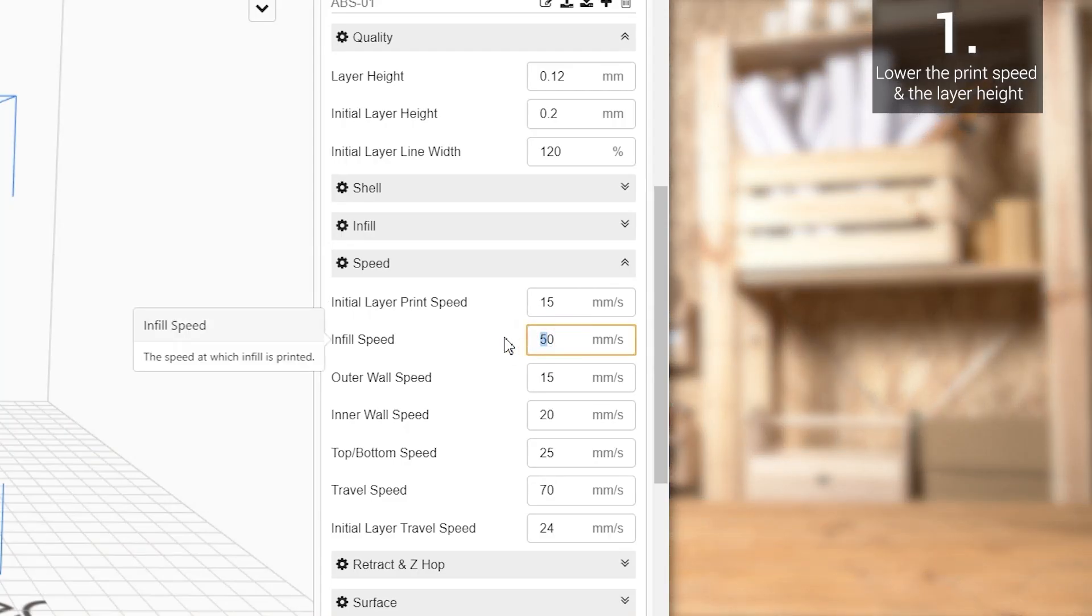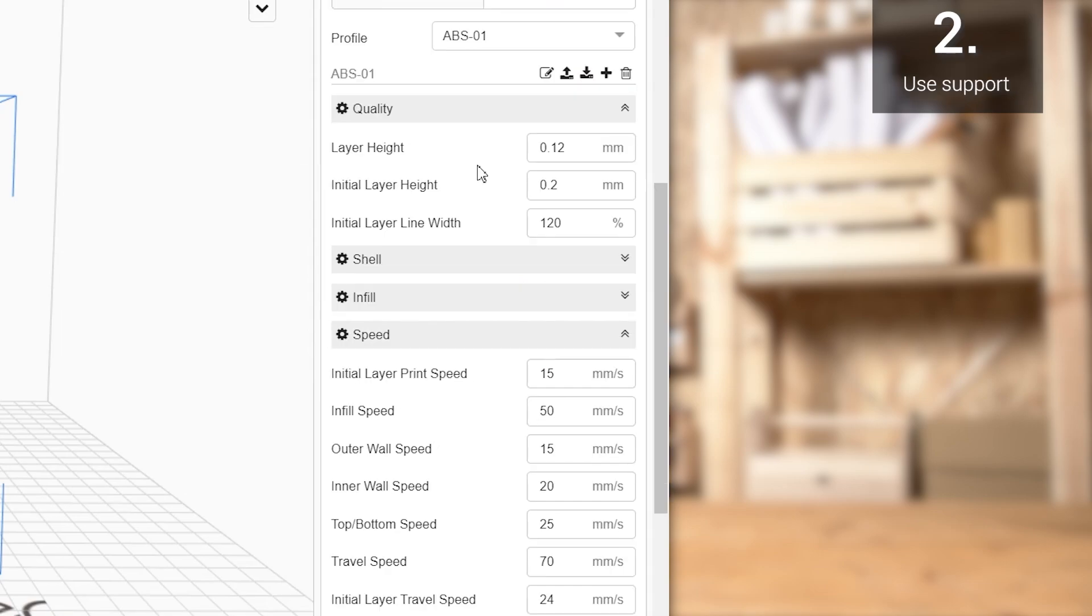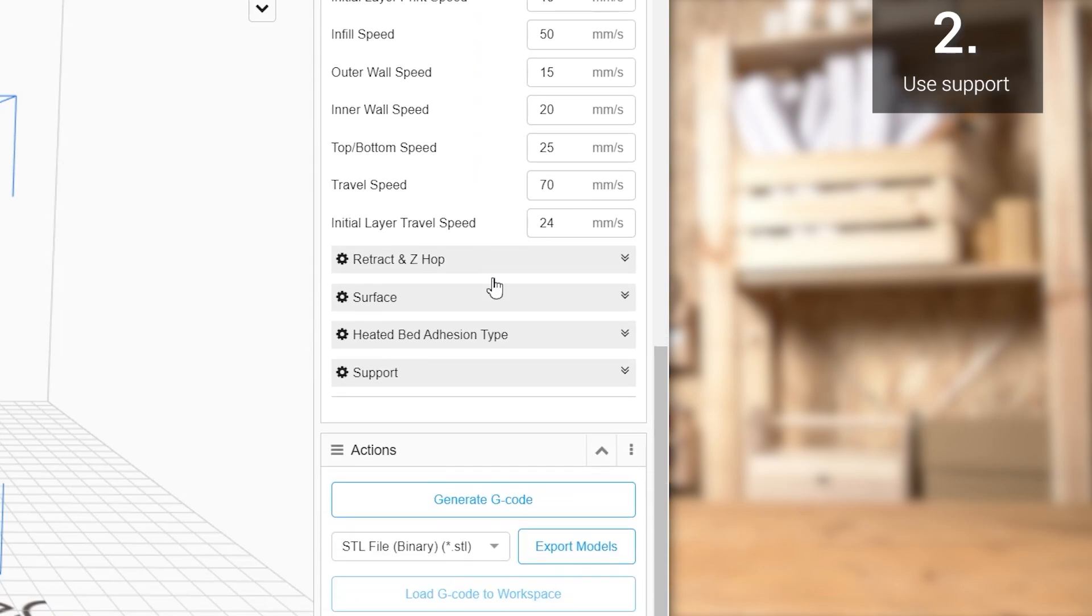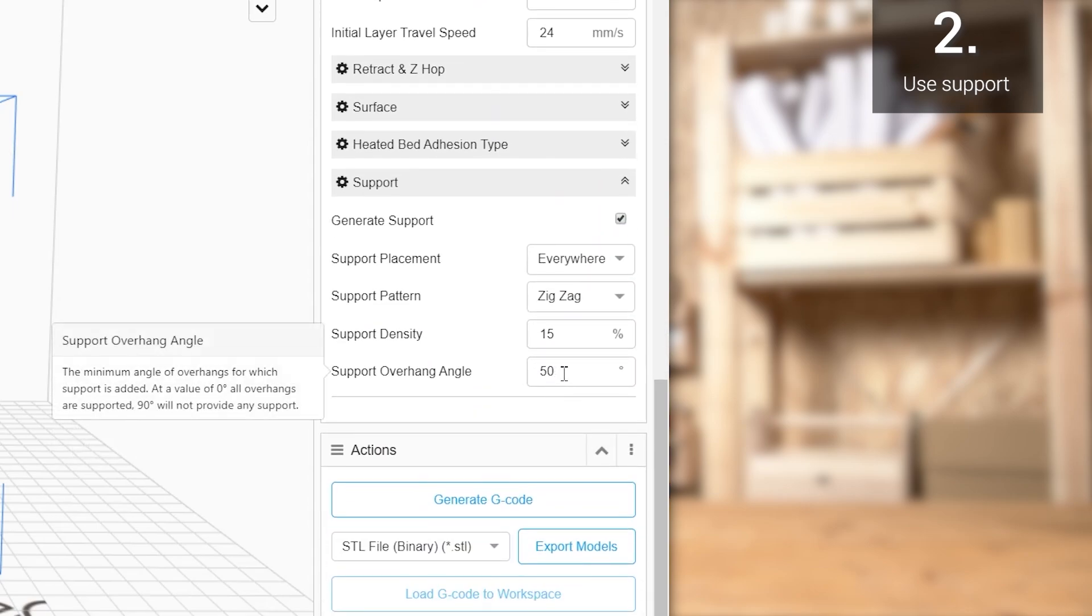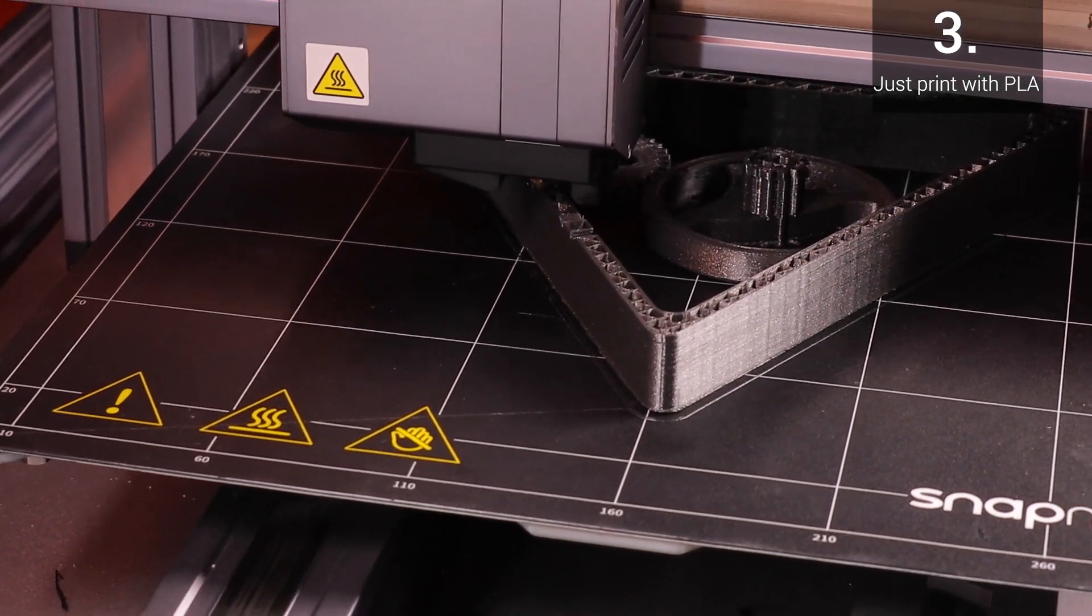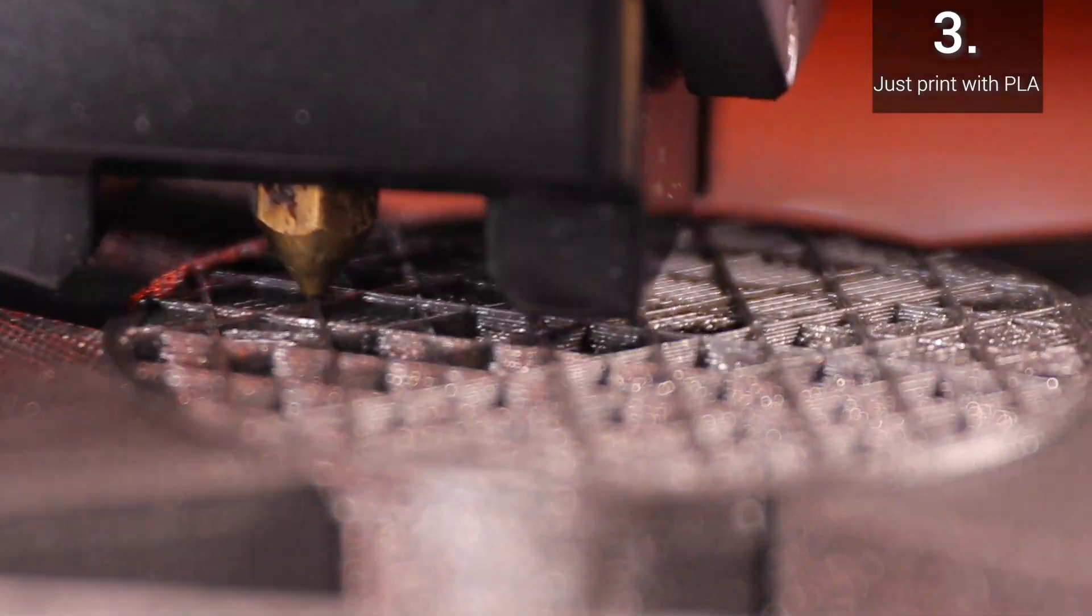One way to improve ABS overhang is lowering the print speed and the layer height. You can also set a proper support overhang angle so that parts beyond that angle can be supported. For most ABS filament, the angle can be up to 45 degrees. Also, always choose the right filament. When durability and heat resistance are not that important, you might as well print overhangs or bridges with PLA.